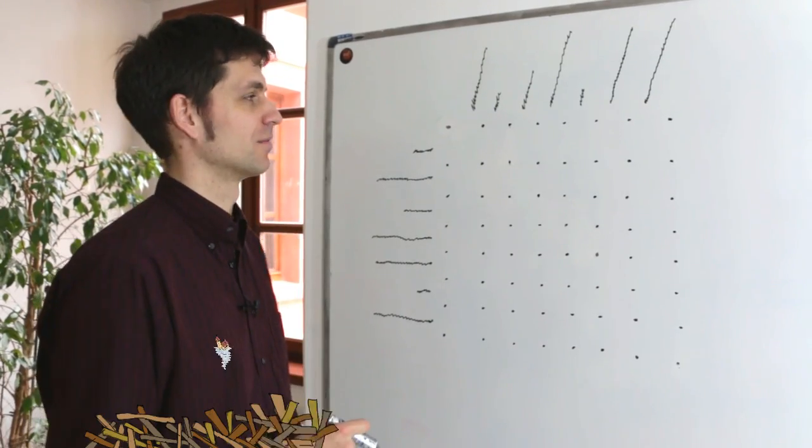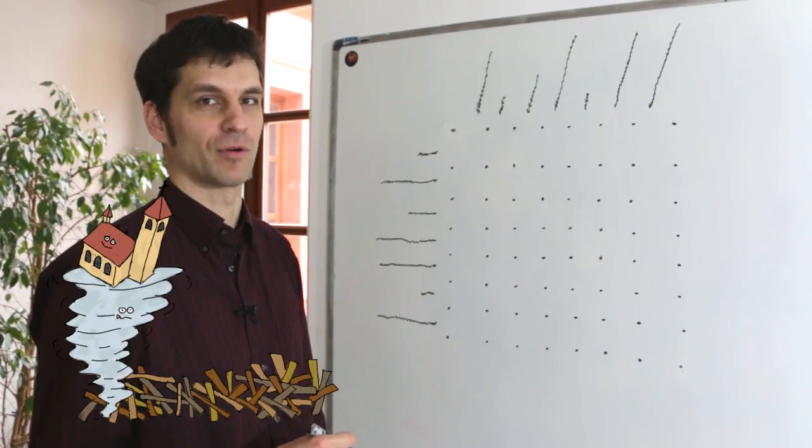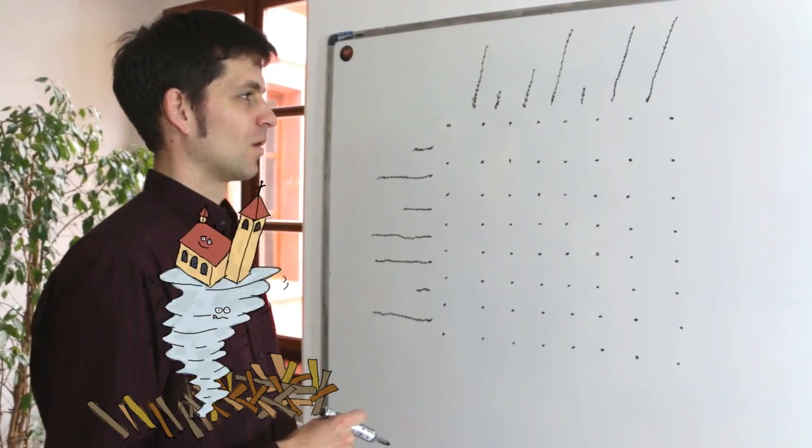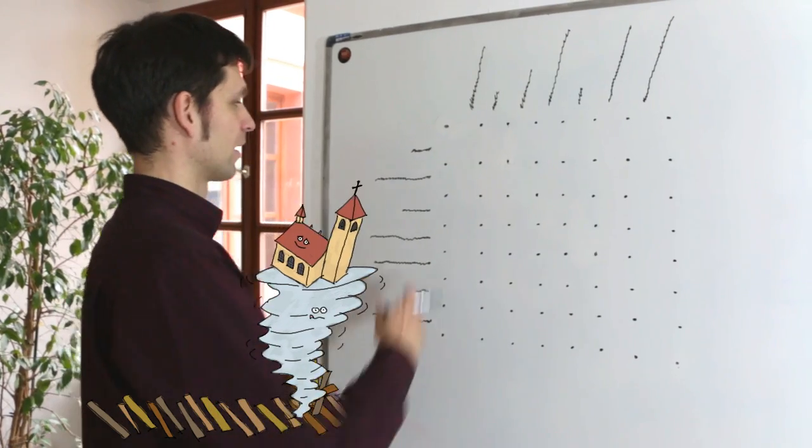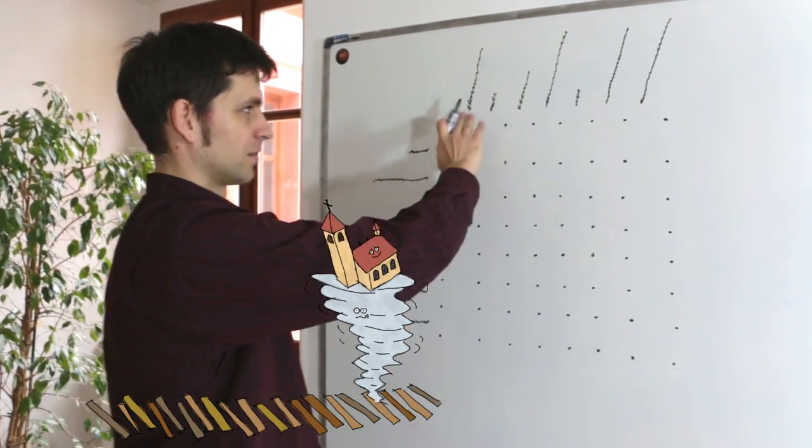The Gale-Church Alignment algorithm is a nice example of dynamic programming style. All the algorithm sees are the length of the source sentences and the target sentences.